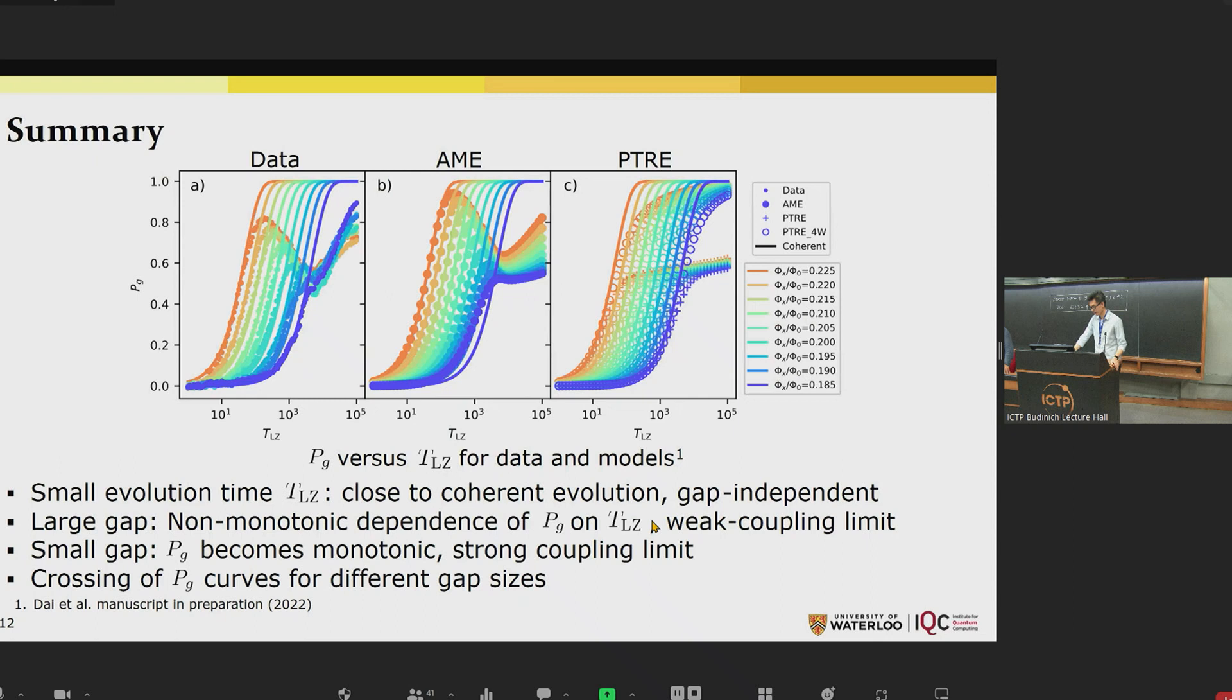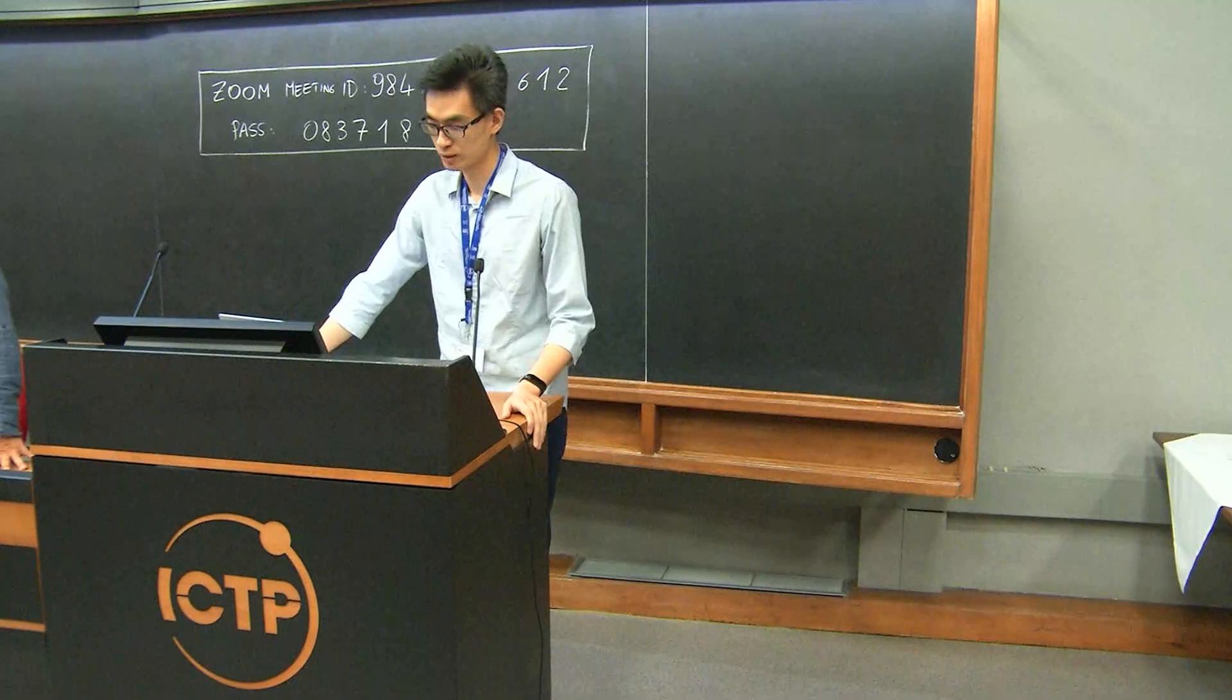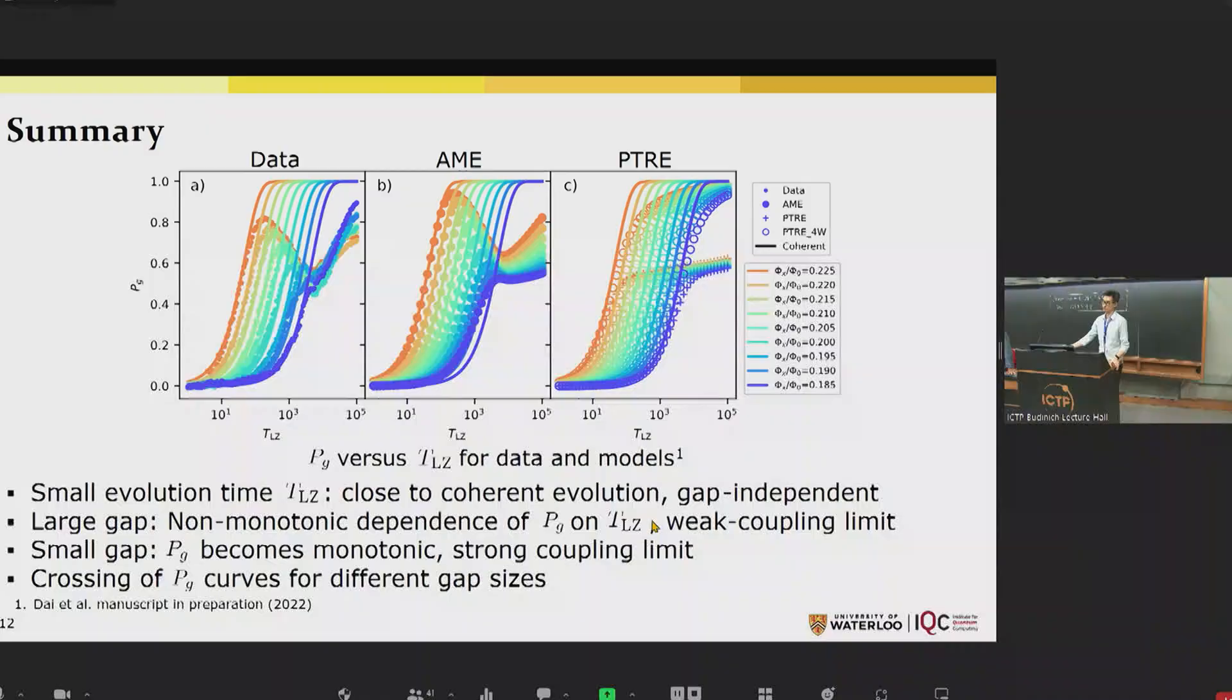Just to summarize, we saw that when the evolution time T_LZ is small, the measured transition probabilities are close to the coherent limit, and this is independent of the gap size of the problem. In the large gap limit, there's a non-monotonic dependence of the ground state probability on T_LZ, consistent with the weak coupling limit results that have been studied by previous literature. In the small gap limit, P_G becomes monotonic, which is also consistent with strong coupling to low frequency noise. Just to highlight the peculiar feature: the crossing of different P_G curves for different phi-x, and you end up having higher ground state probability when the gap is smaller at long evolution times.